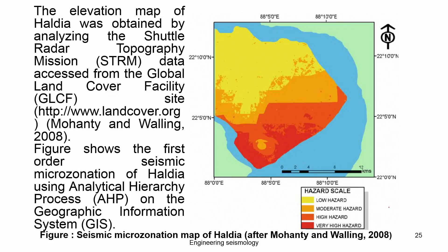The figure shows the first-order seismic microzonation map of Kolkata. This macro-level map corresponds to level one as per international recommendations, where considering only geology and seismicity constitutes level one. They classified the region into low, moderate, high, and very high hazard levels, with darker colors indicating higher hazard regions.